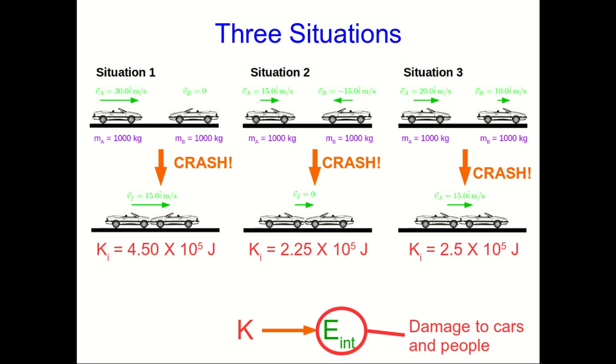And in Situation 3, the relative speed is much smaller. It's only 10 meters per second. So we would intuitively think Situations 1 and 2 would be the most dangerous and would be about equally dangerous. And Situation 3 would be perhaps much less dangerous.